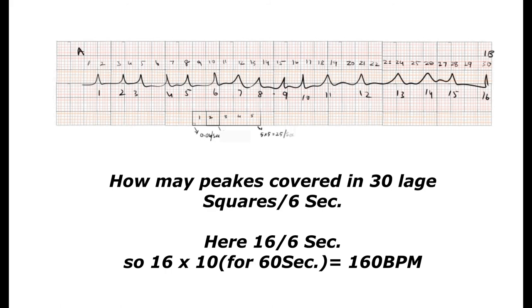Here we have 16 peaks counted in 30 large squares. So for 60 seconds, 16×10 equals 160 beats per minute. This is how we calculate heart rate based on the ECG.